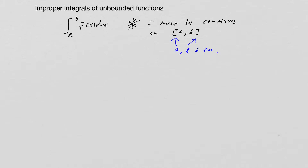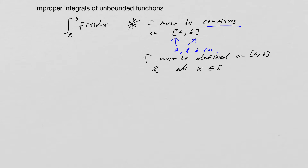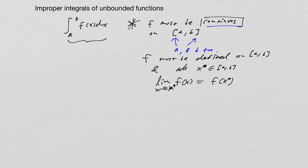Both endpoints must be there. So if f is continuous on the whole interval, f must be defined on [a, b], and all points x in [a, b] must satisfy the limit as x goes to x-star equals f of x-star. This is a rigorous requirement for this integral to exist.